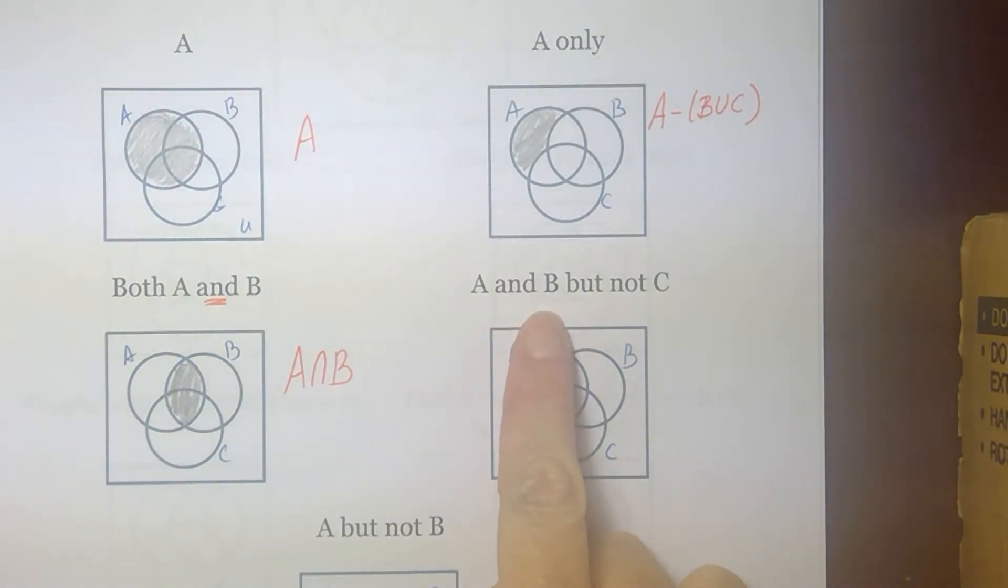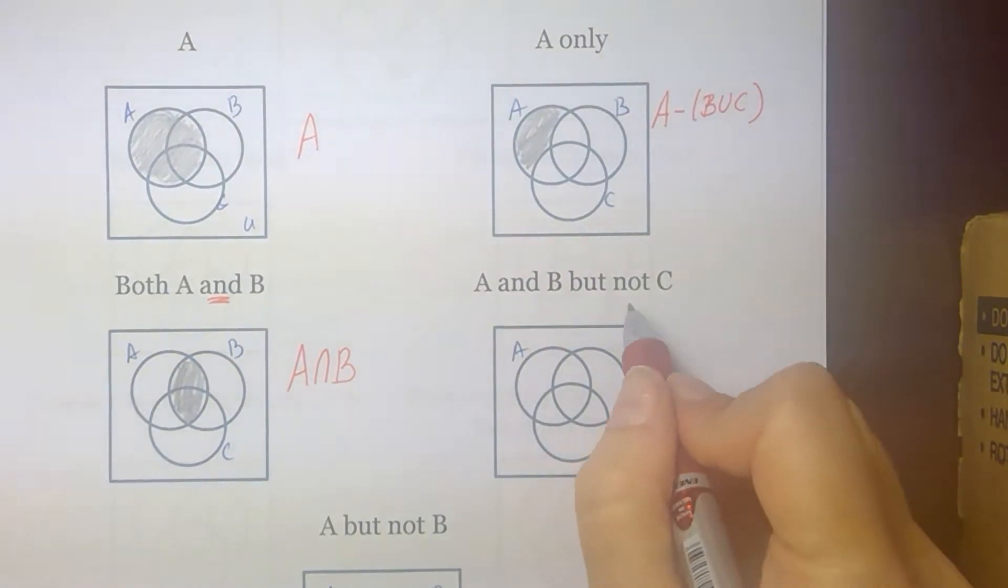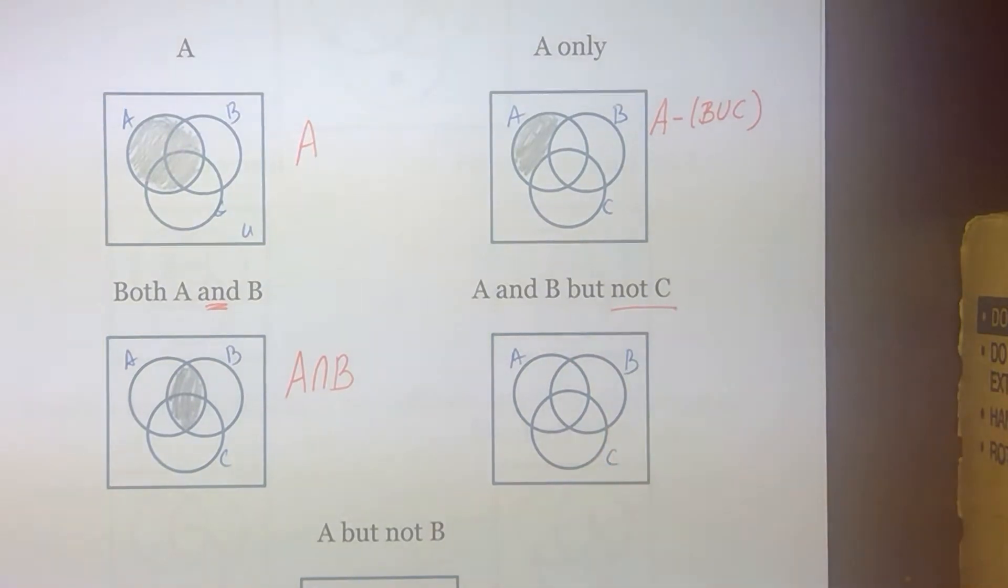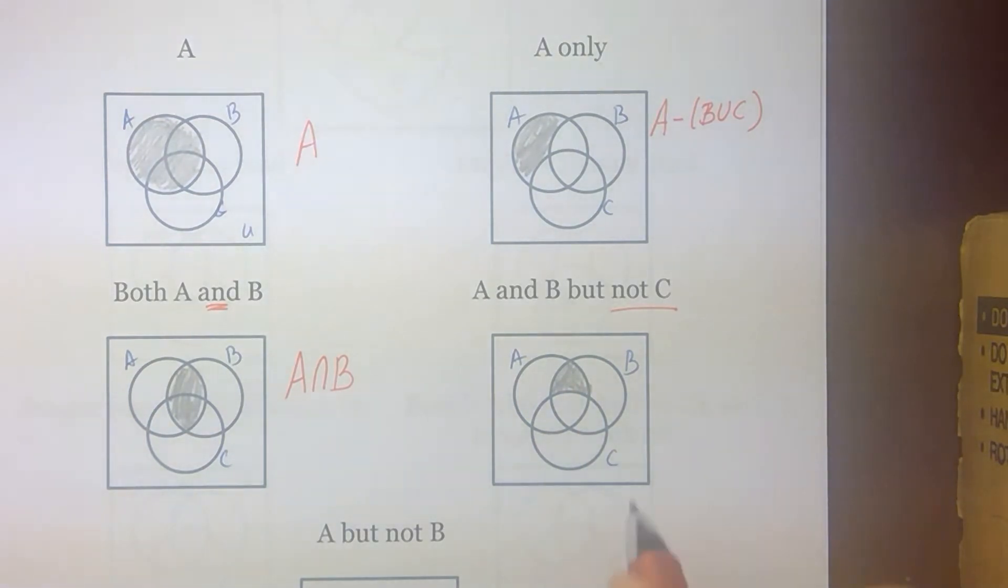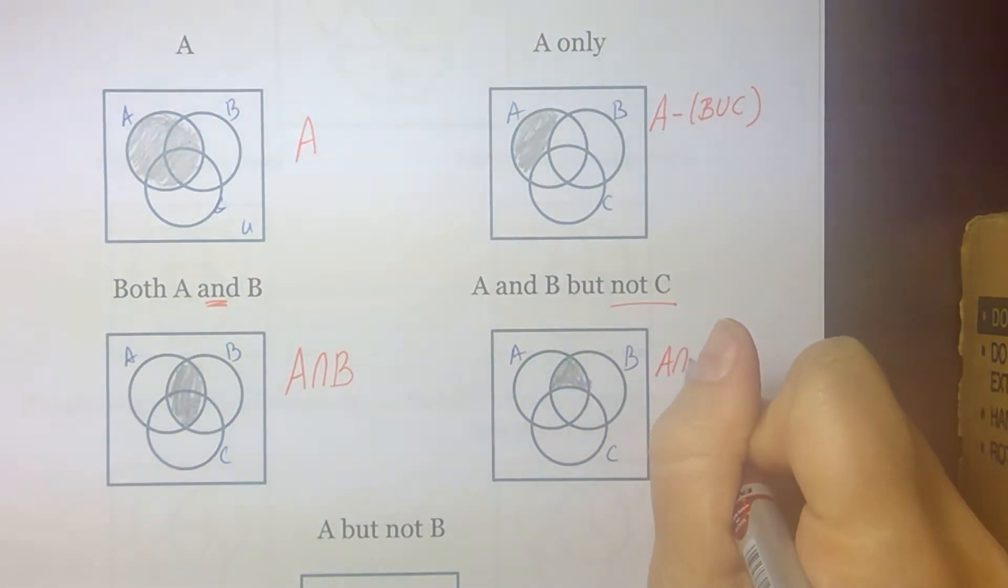For the next one, I want to start with A and B, but not C. So if I look at A and B, I have those two regions, but region 5 is also in C. So A and B, but not C would be just region 3. So that's going to look like A intersect B minus C.